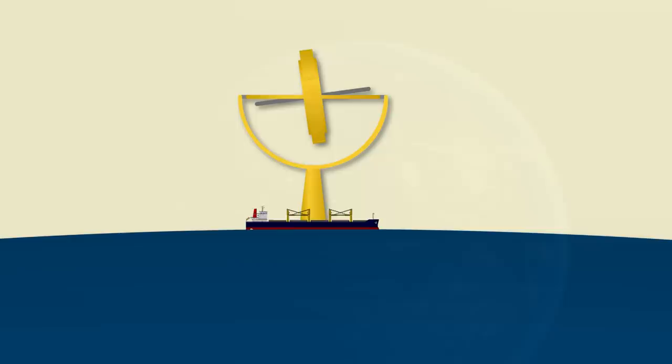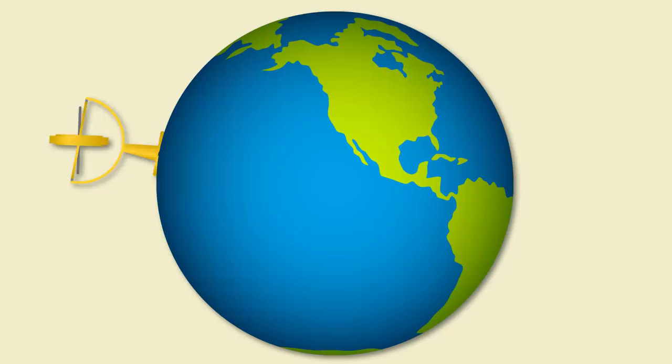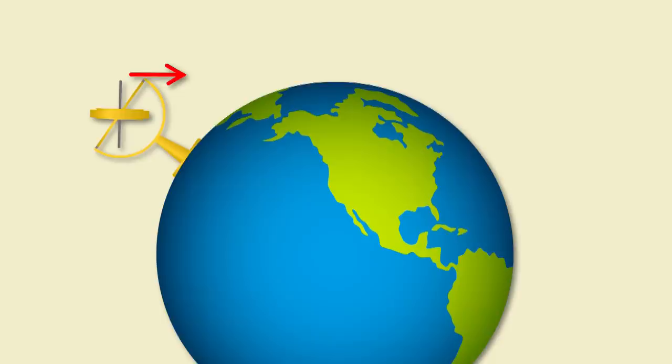Imagine you have a ship with a gyro compass pointing north then your ship starts steaming north. As you steam north following the curvature of the earth your gyro will naturally want to tilt upwards. The damping effect will create a force opposing the upward tilt causing your gyro to precess to the west. This is steaming error.